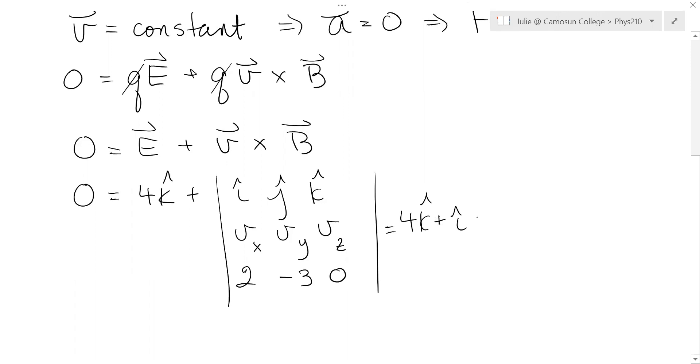So when we take the determinant, we get an i hat component of Vy times zero, so that's zero, minus minus three Vz. So that'd be plus three Vz.